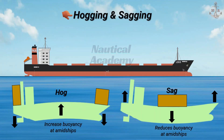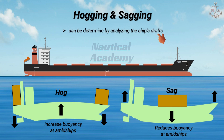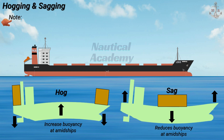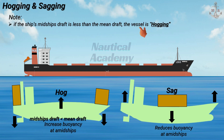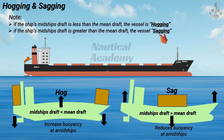In reality, it is difficult to determine whether a ship is hogging or sagging just by visual observation. Software such as Lodicator can be used to assess these stresses. However, another reliable method is by analyzing the ship's observed draft. Always remember: if the ship's midship draft is less than the mean draft, the vessel is hogging. If the ship's midship draft is greater than the mean draft, the vessel is sagging.